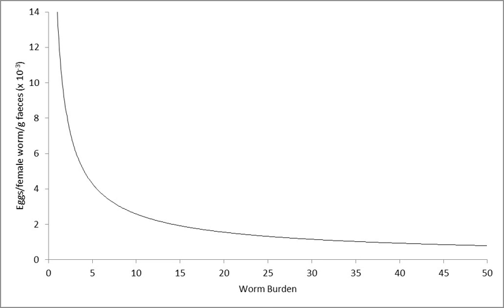Negative density dependence, or density-dependent restriction, describes a situation in which population growth is curtailed by crowding, predators, and competition. In cell biology, it describes the reduction in cell division. When a cell population reaches a certain density, the amount of required growth factors and nutrients available to each cell becomes insufficient to allow continued cell growth.